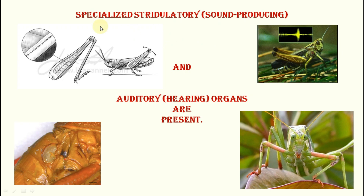Orthoptera have two abilities regarding sound: producing sound and receiving sound. They produce sound by femoro-alary type or alary type of stridulation. They hear sound using the tympanal organ, which is present either on the first abdominal segment or on the fore tibia. The tympanum is the sound-receiving organ. In femoro-alary type, the femur of the hind leg is rubbed against the wing region to produce sound. In alary type, only the two wings are rubbed together.